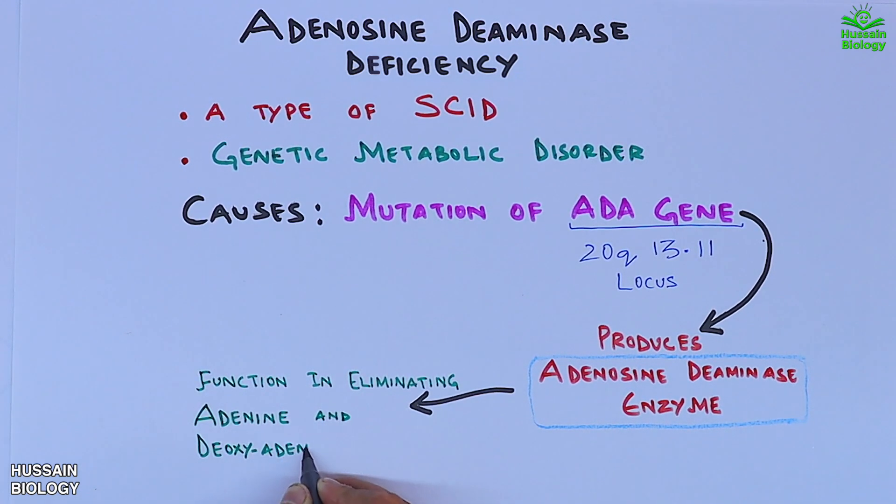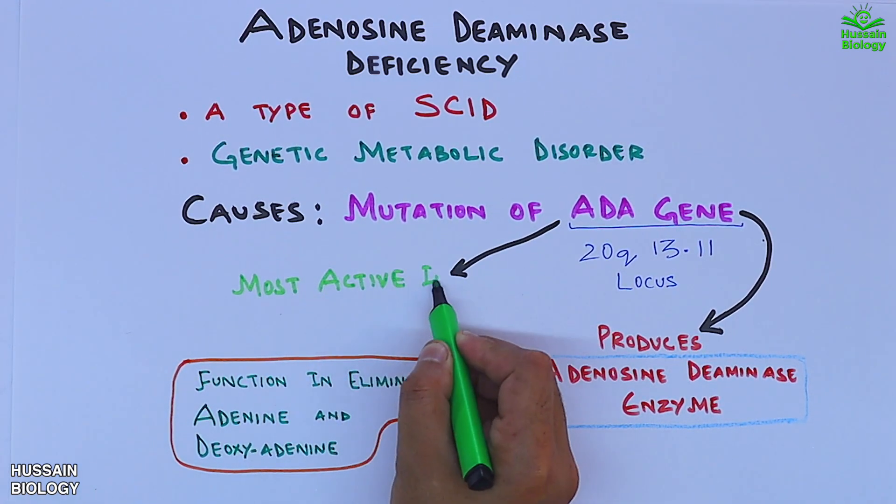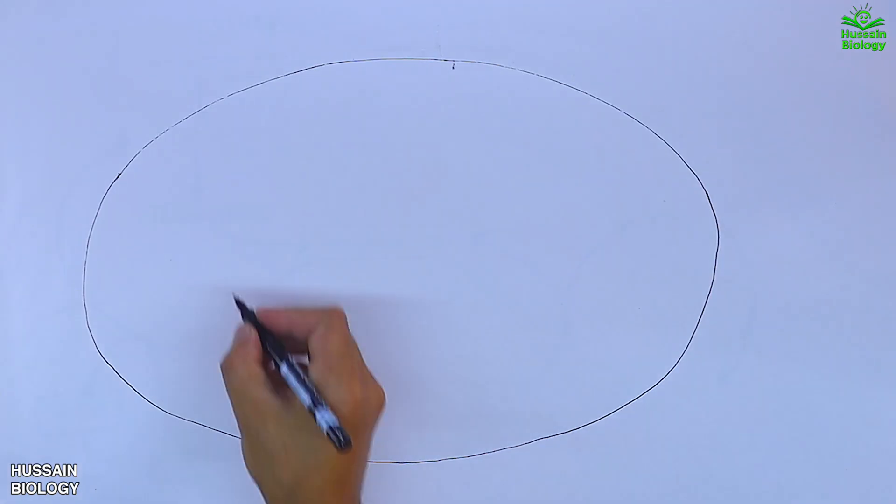It must be noted here that this ADA gene is most active in lymphocytes. Here in this diagram we have the cell, let's say this is the lymphocyte, and within the cell we have the deoxyadenosine molecule.